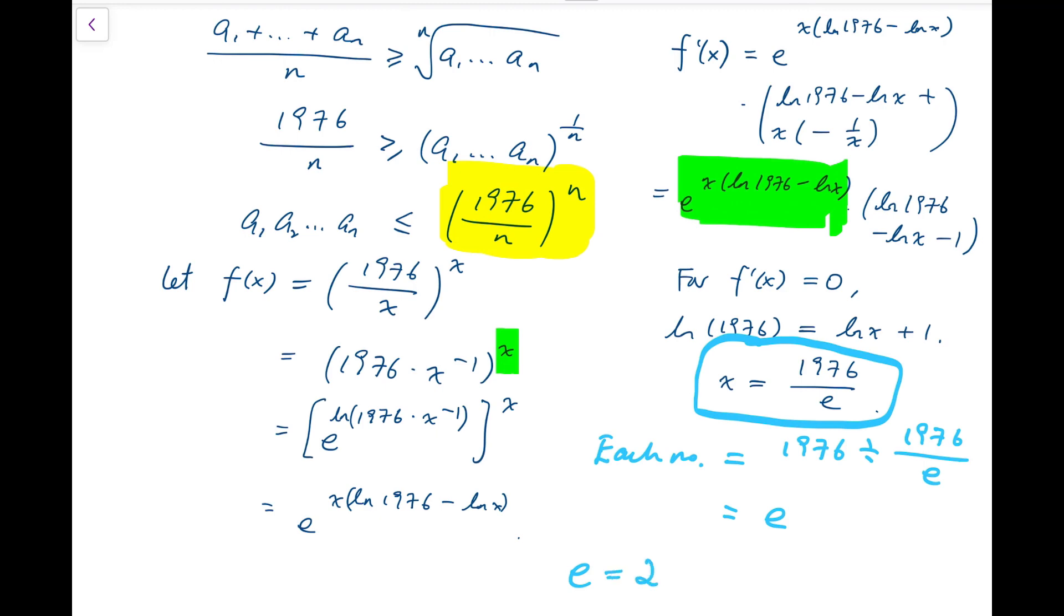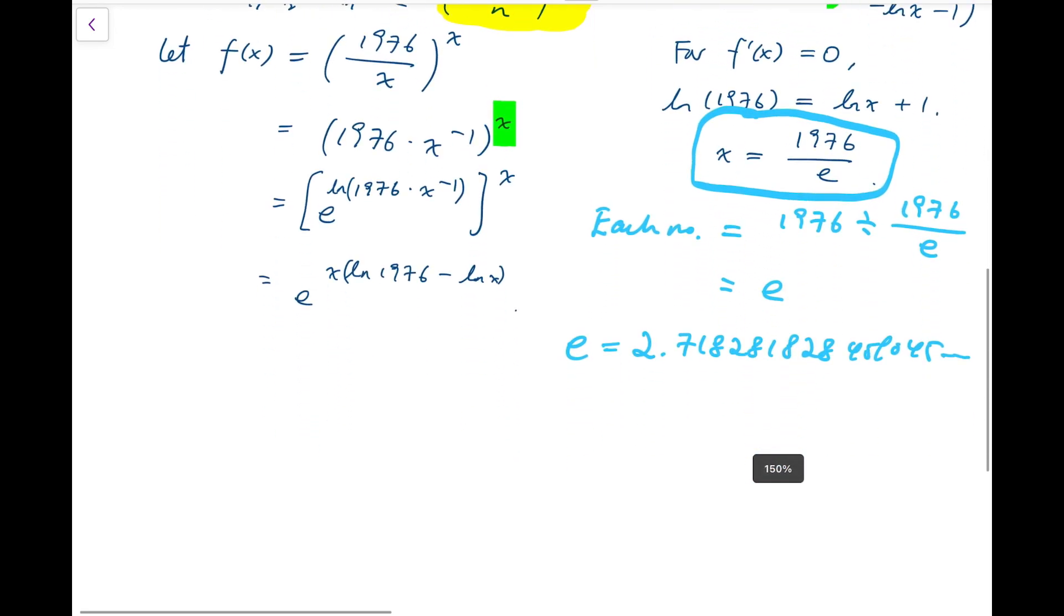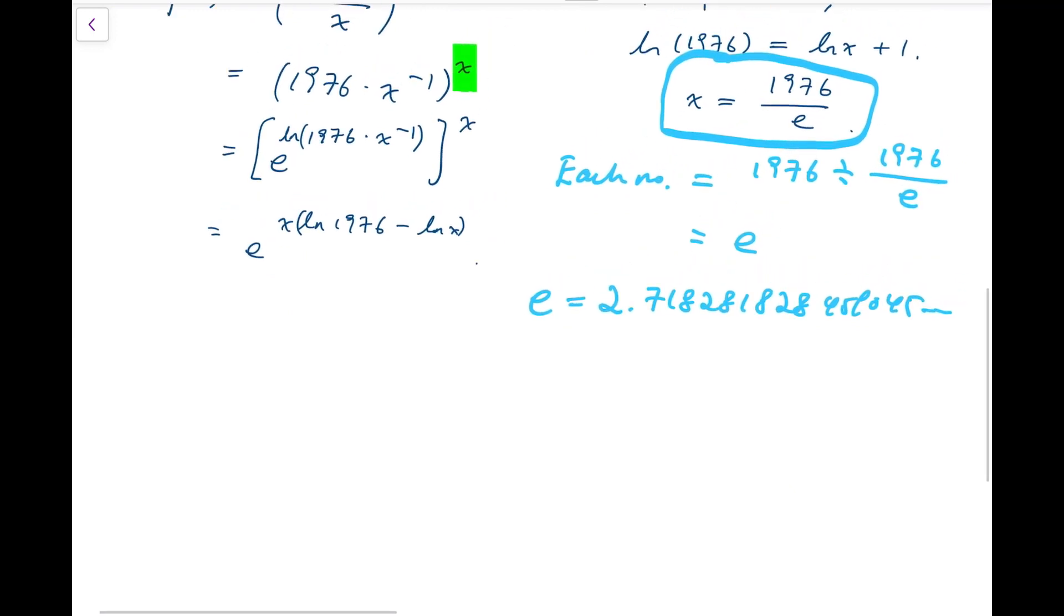Given that e is equal to 2.718281828459045 and so on, we know that we should always aim for threes. This proof by calculus gives us a very strong evidence to support our rule of splitting numbers, so this tells us that our answer that we have obtained intuitively is true. The answer is 2 times 3 to the power 658.